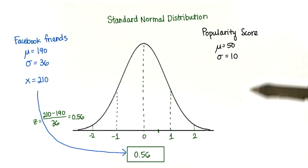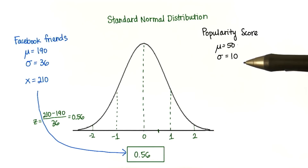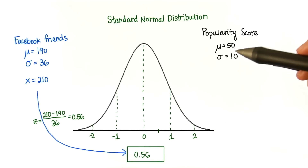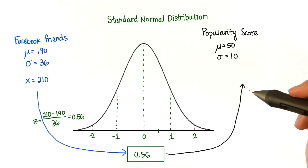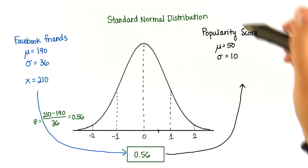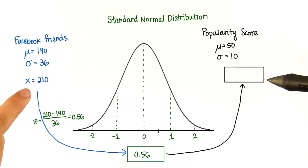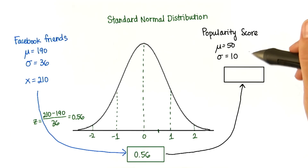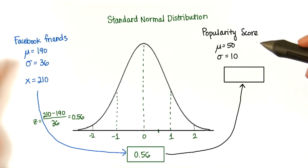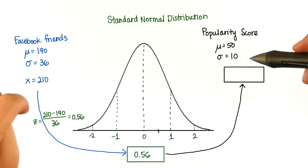So now we want to convert it to a new popularity score with mean 50 and standard deviation 10. Try doing this yourself. What's going to be this person's popularity score if they have 210 Facebook friends? And remember, our operational definition of popularity is the number of Facebook friends.